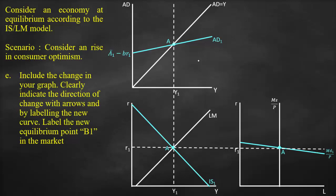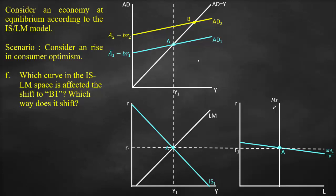We include the change on the graph with arrows and label the new curve. Since we have a positive shock in the goods market — an increase in consumer optimism — this results in higher consumption and consequently higher aggregate demand. The aggregate demand curve shifts upward and is labeled aggregate demand 2. The new equilibrium point is the intersection between AD2 and the 45-degree line, labeled point B. We draw a dotted vertical line to reflect the new equilibrium output Y2 in both the goods market and the ISLM model. Since aggregate demand increased, this shifts the IS curve to the right in the ISLM model, crossing the point Y2 and R1, which we label as B1.